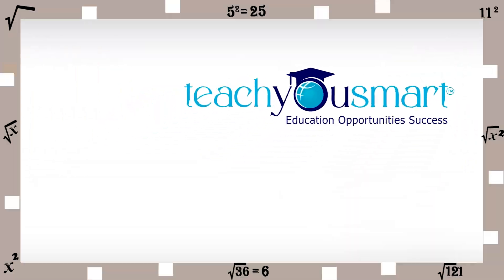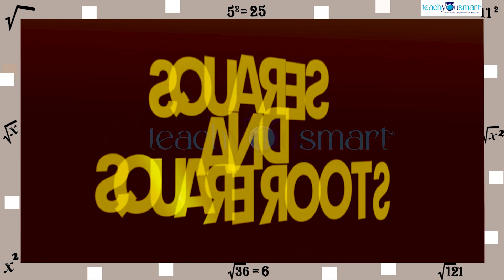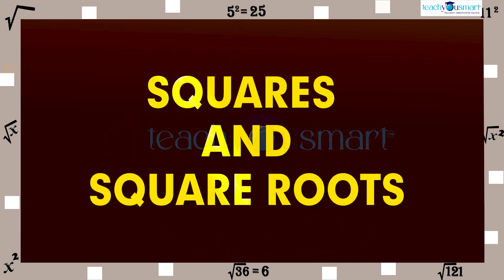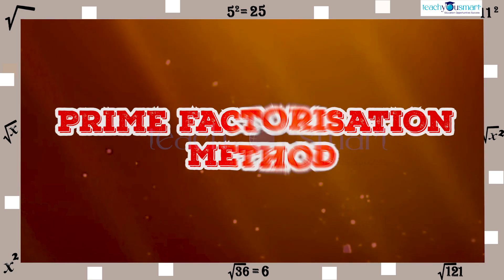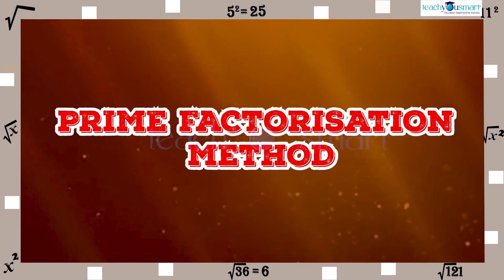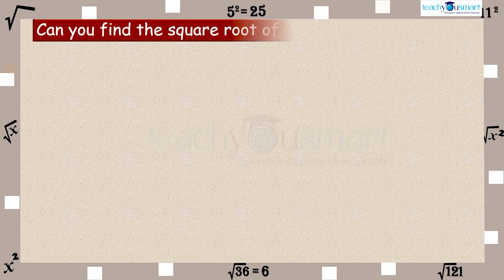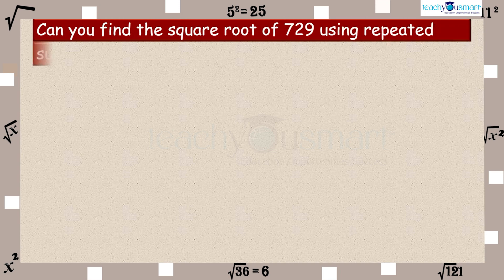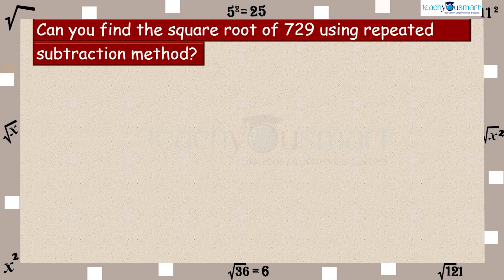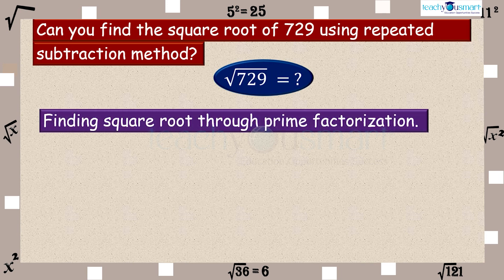Hello students, let's continue with the topic of squares and square roots. Today we are going to discuss the prime factorization method. In the last class we discussed the repeated subtraction method to find the square root. Can you find the square root of 729 using the repeated subtraction method? Yes, but it will be time consuming. Let's try to find it in a simpler way — that is, finding the square root through prime factorization.